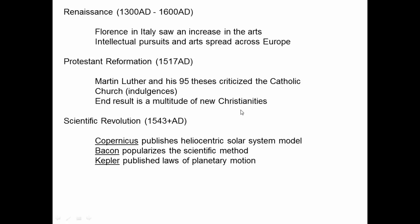We also have the Scientific Revolution. Copernicus first published the heliocentric solar system — the sun at the center, with Earth going around it. Bacon popularized the scientific method, writing about how we should figure things out. Kepler did the mathematics for Copernicus, showing that algebra and trigonometry — tools developed in the Middle East — could explain and predict the movements of the planets. The stars stay in fixed relative positions, but planets wander, and he showed you could predict this mathematically, demonstrating that you can actually figure things out and make predictions.